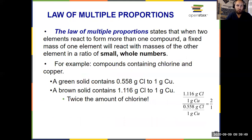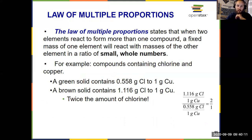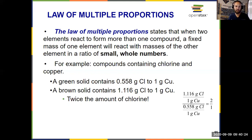We also have the law of multiple proportions. That tells us that when two elements react to form more than one compound, a fixed mass of one element will react with the masses of the other element in a ratio of small whole numbers. This doesn't contradict the law of definite proportions — it builds on it. It's telling us that we can have things come together in multiple different ratios, so we could have something that's one to one and another that's one to two. These two laws together just mean they are different compounds, and they both maintain their own unique ratio throughout.